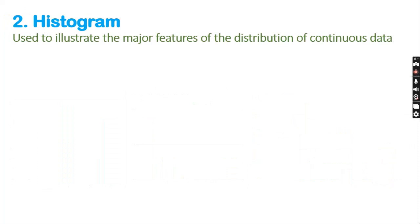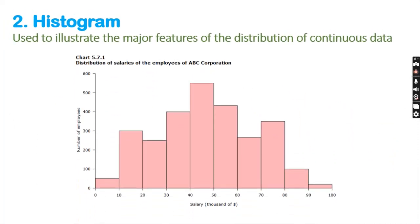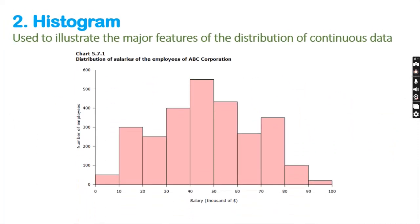Number 2: Histogram. Histogram can be used to illustrate continuous data and its distribution. Since the histogram shows a continuous distribution of data, there is no gap between the bars.